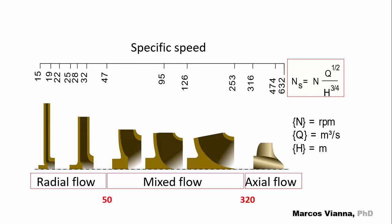When specific speed goes up to 50, we're dealing with radial flow impellers. If it's greater than 320, we're dealing with axial flow impellers. And between these values, we're dealing with mixed flow impellers.